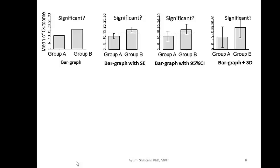We use standard deviation in Table 1 to describe our sample — for example, age: mean ± standard deviation. If mean age is 50 with a standard deviation of 10, then two times the SD gives you a range of 30 to 70, meaning 95% of your subjects' ages fall in that range. Standard deviation is very useful for describing who your patients are.